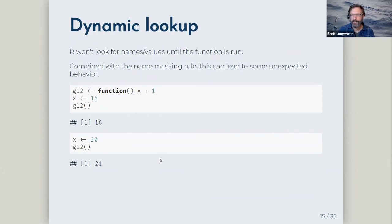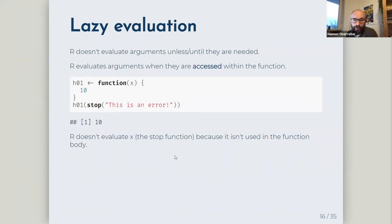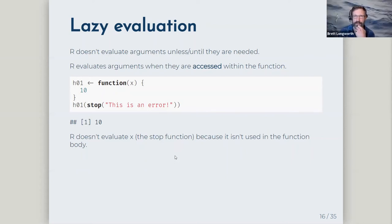One problem with dynamic lookup: if you have a typo in your function and end up getting a value from your environment, it can be really confusing — there's no error; you have to trace back the values to figure out where it was getting that from. There doesn't seem to be a way to disable the lookup or change the evaluation rules in R.